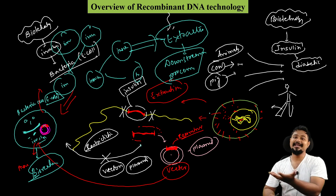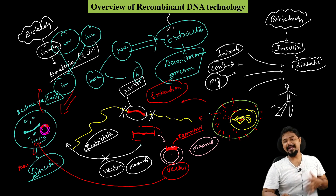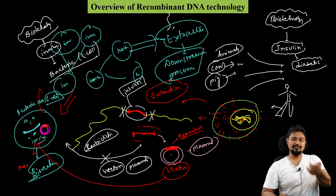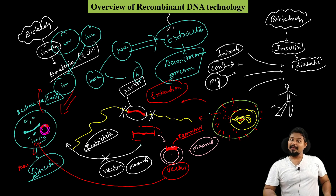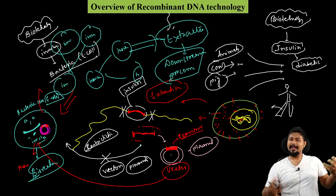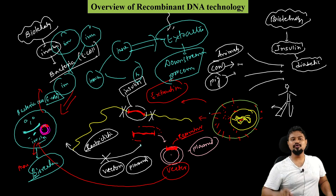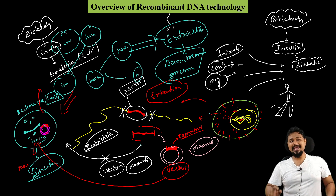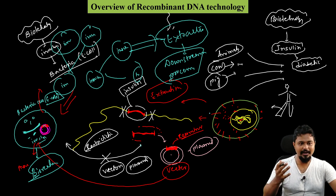This insulin helps diabetic patients. So through biotechnology we can achieve this entire process. Everybody benefits — through recombinant DNA technology we can produce human insulin safely and at scale.